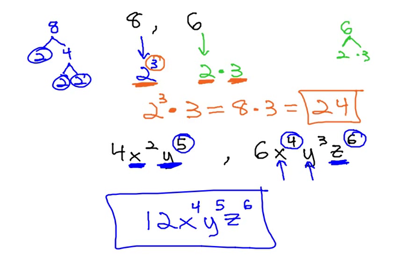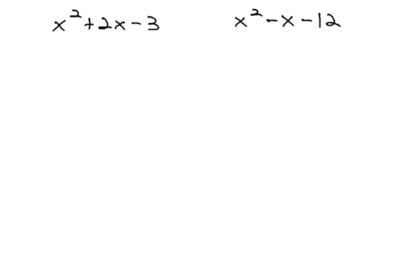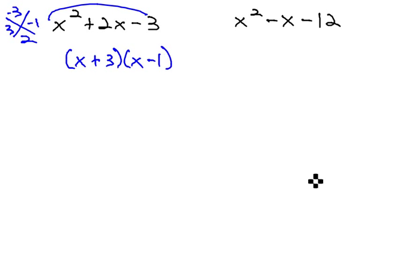We can follow this same pattern with polynomials. The trick is, with polynomials, we might have to do some work to identify the factors we need. You guessed it, we need to factor each polynomial. x squared plus 2x minus 3 and x squared minus x minus 12. Factoring the first one, multiplying the negative 3 and adding 2 would be 3 and negative 1. So that is x plus 3 times x minus 1.